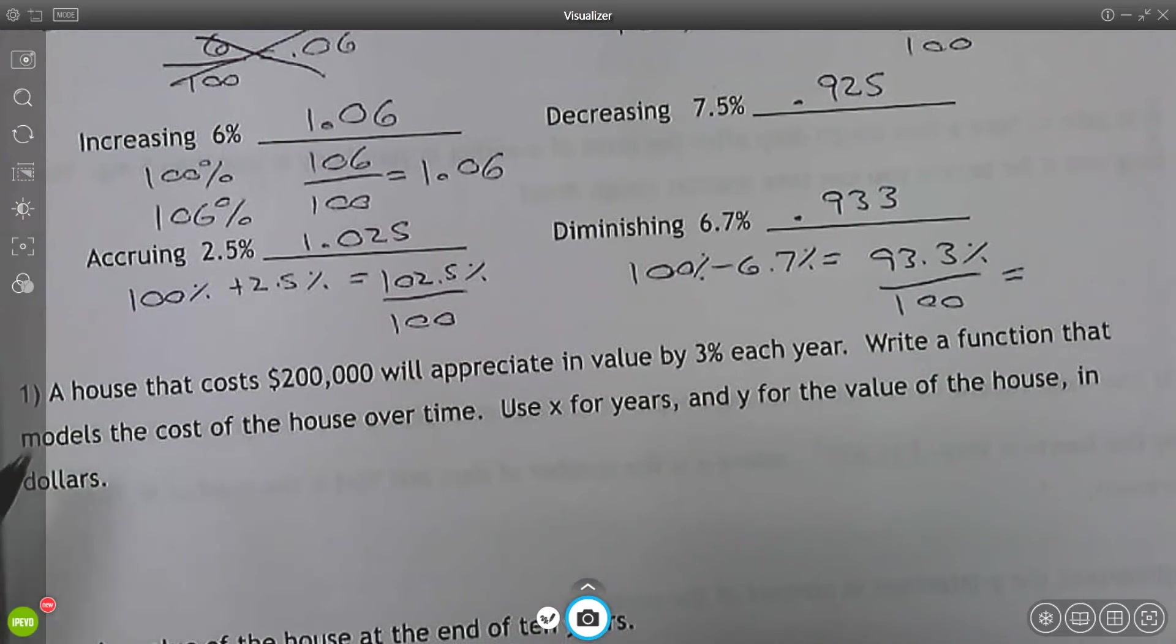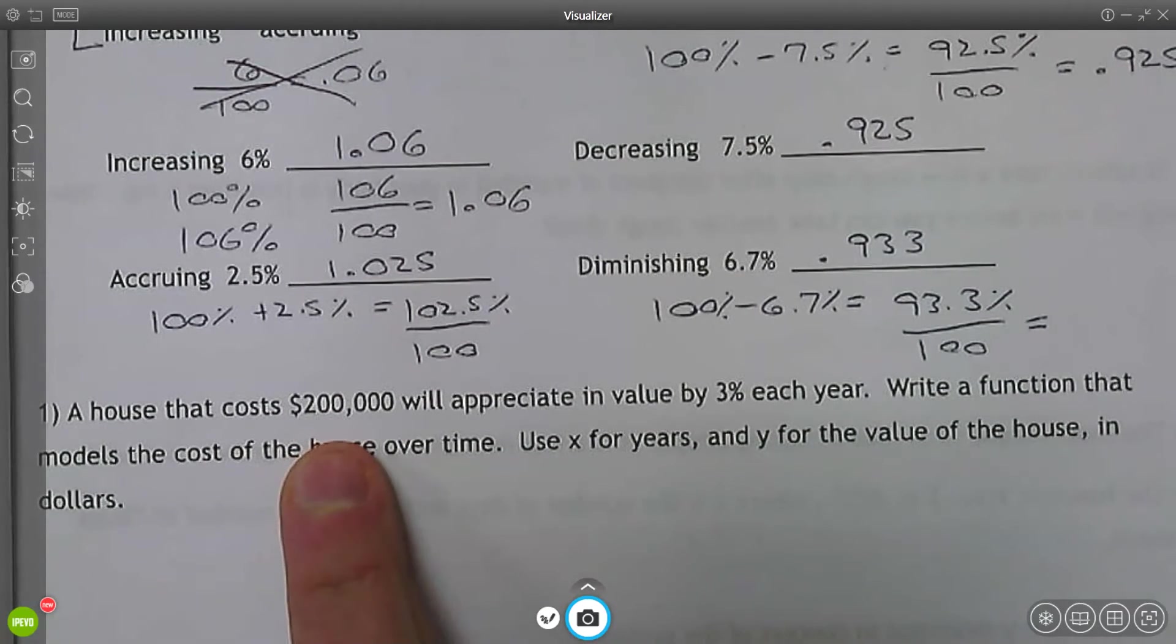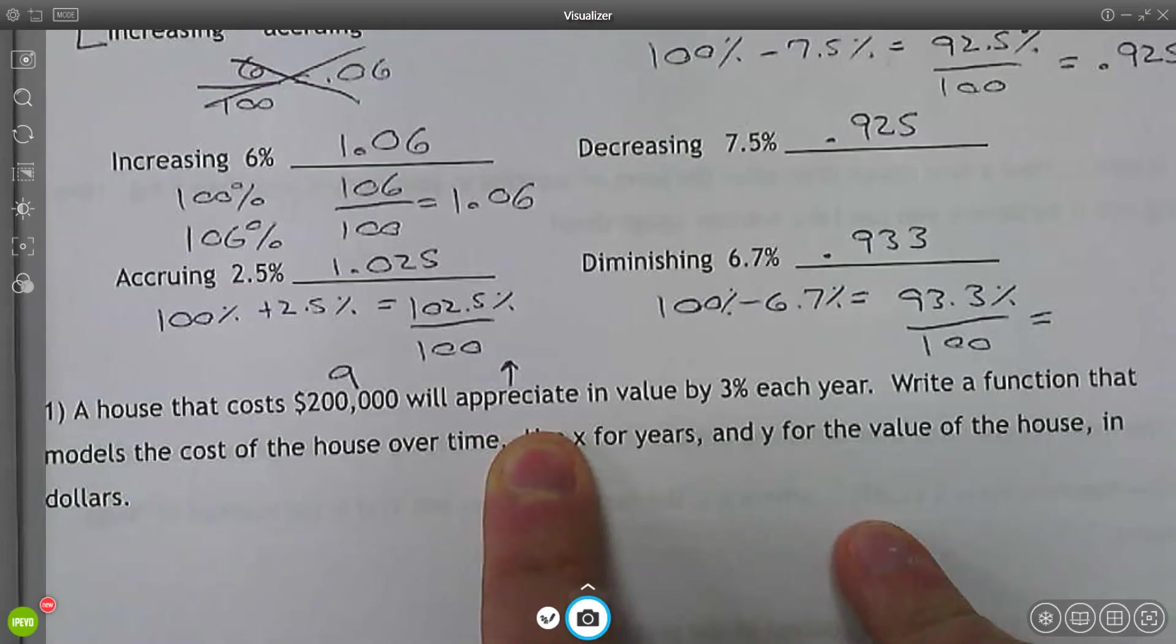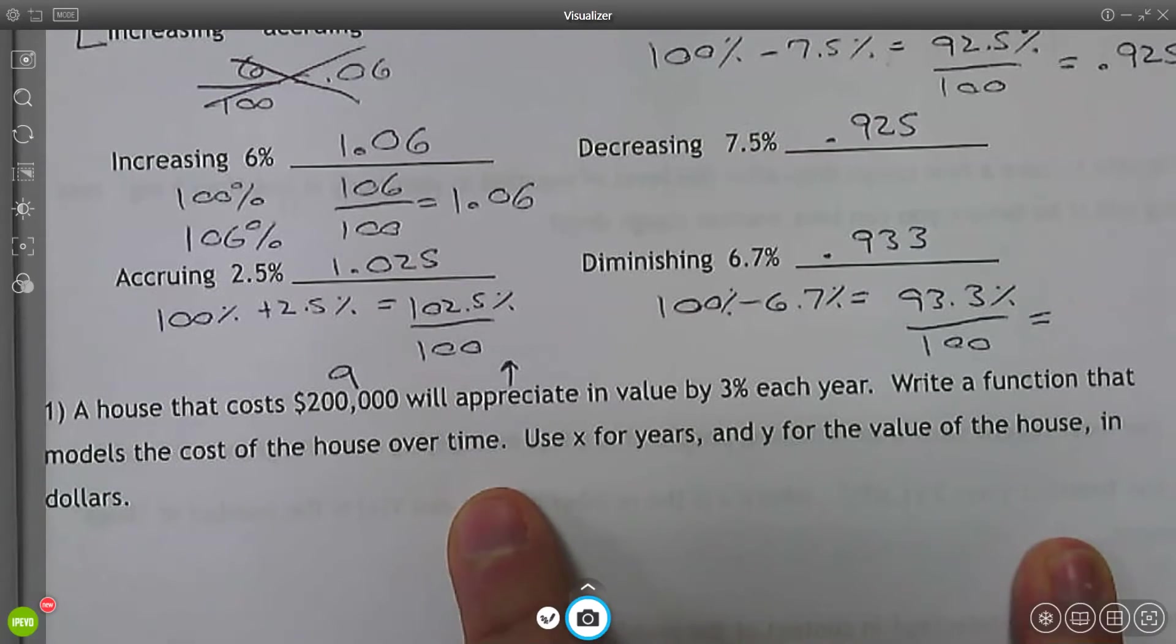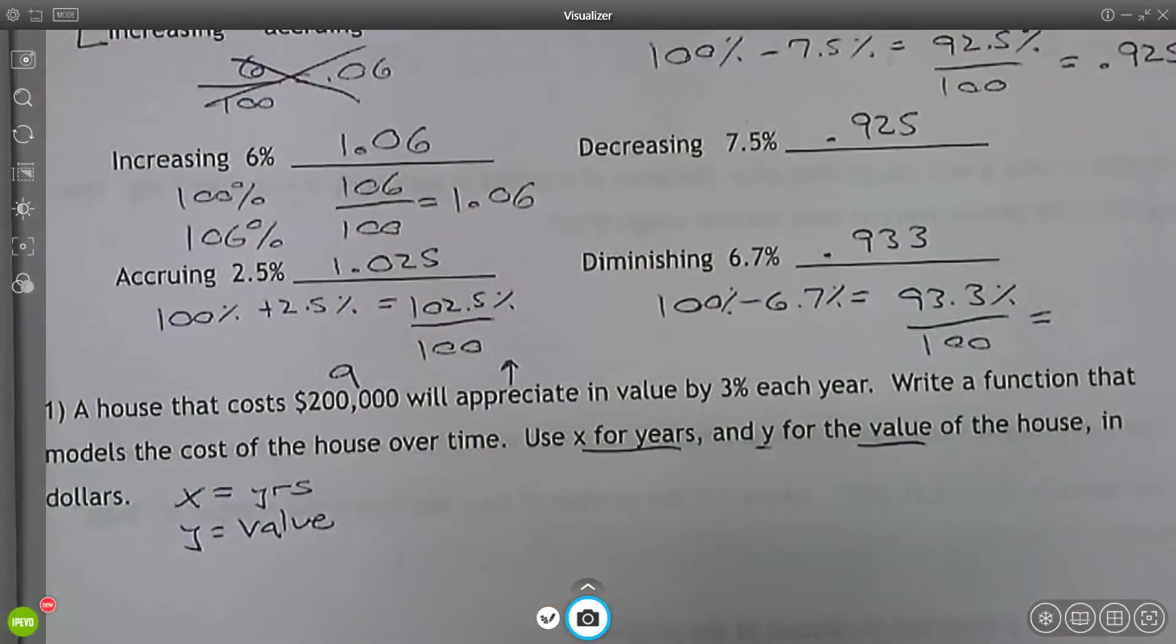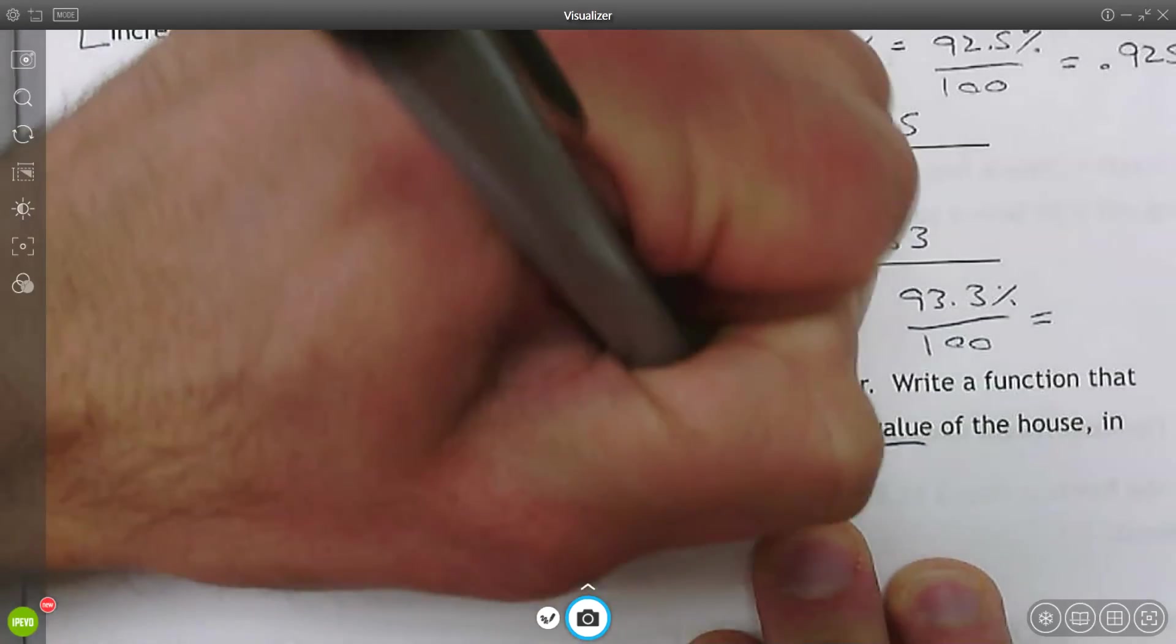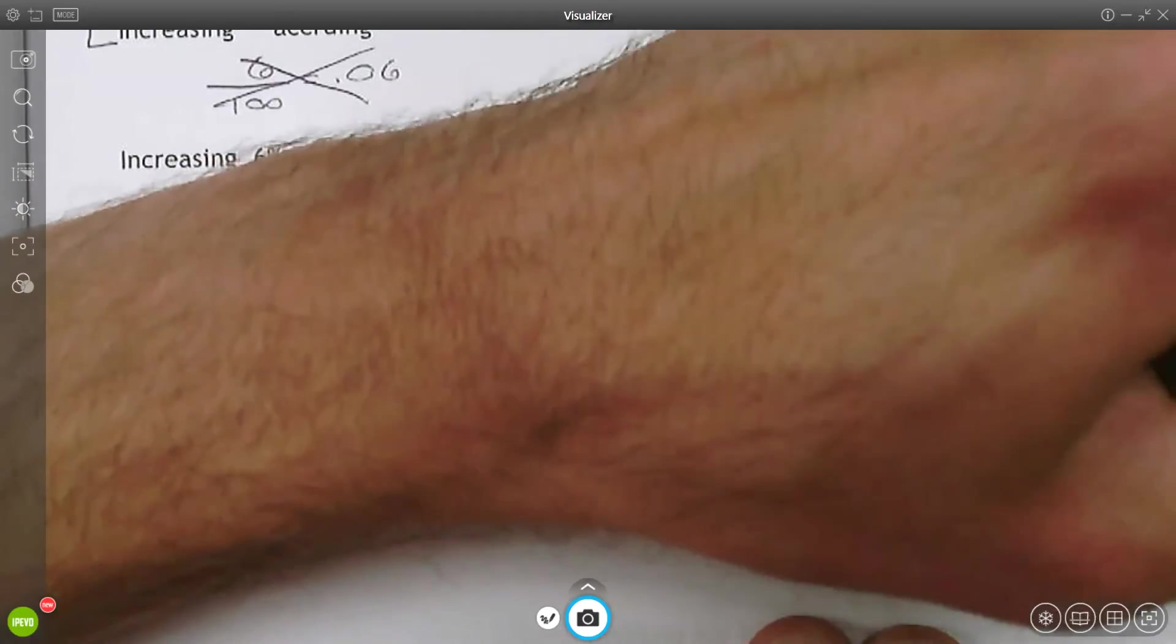On the bottom, now we're going to actually take this and create a function. So you have a house that costs 200,000. This is the initial value, the starting value. This is A. And it's going to appreciate. Appreciate means increase or growth in value by 3% per year. Write a function that models the cost of the house over time. X is going to be years. Y is value.